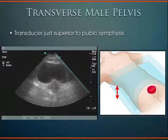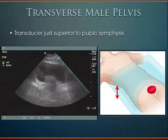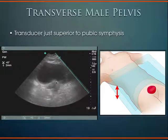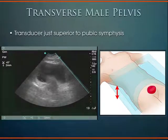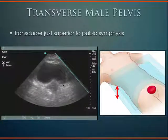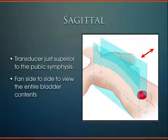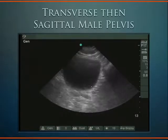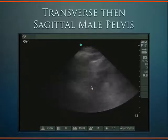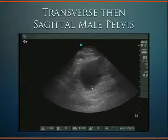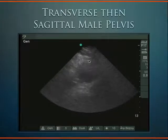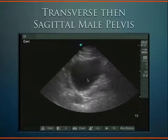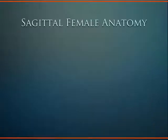In the male pelvis, the transverse view shows a relatively rectangular-shaped bladder, and a generous prostate may be visible inferiorly. When moving into the sagittal plane with the indicator towards the patient's head, you sweep side to side through the bladder contents. First transverse, then sagittal.